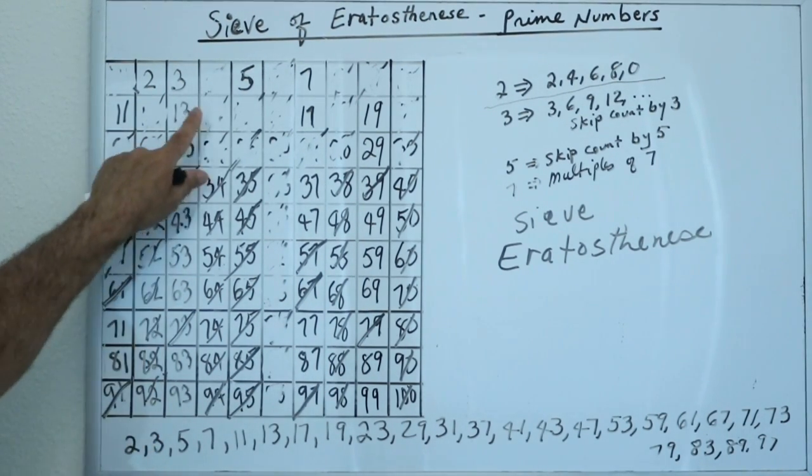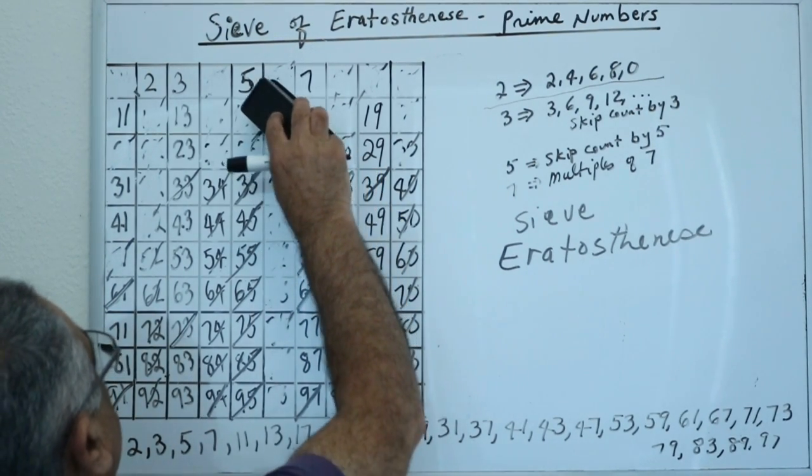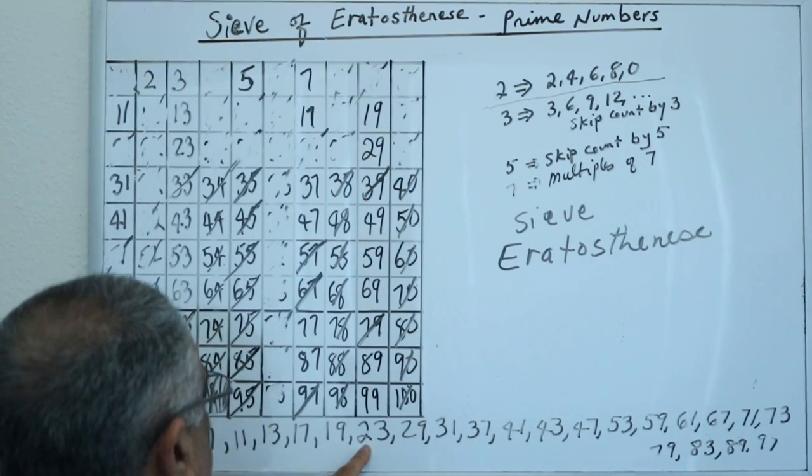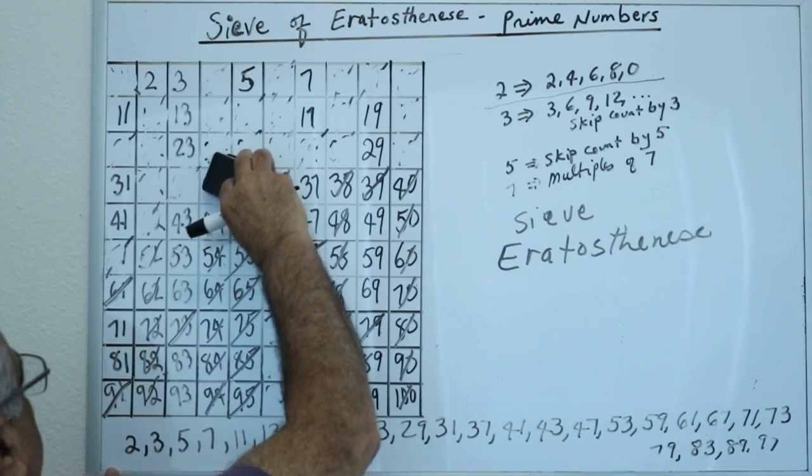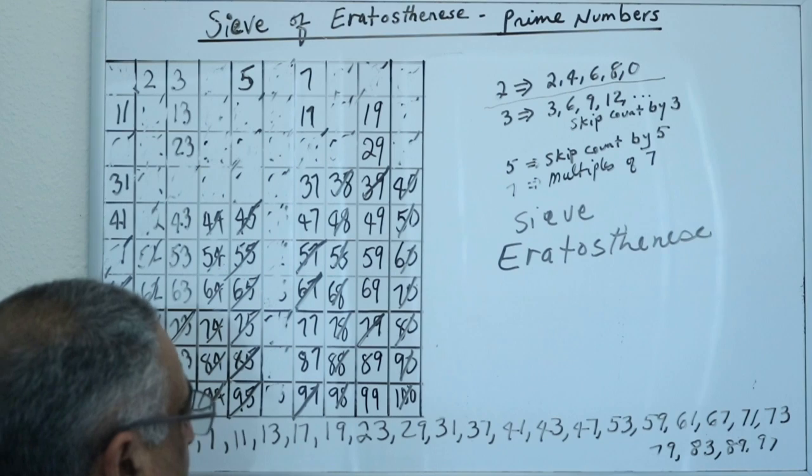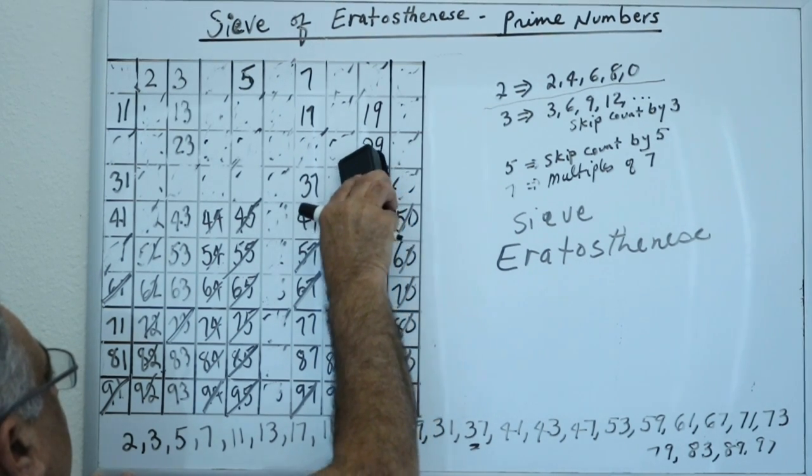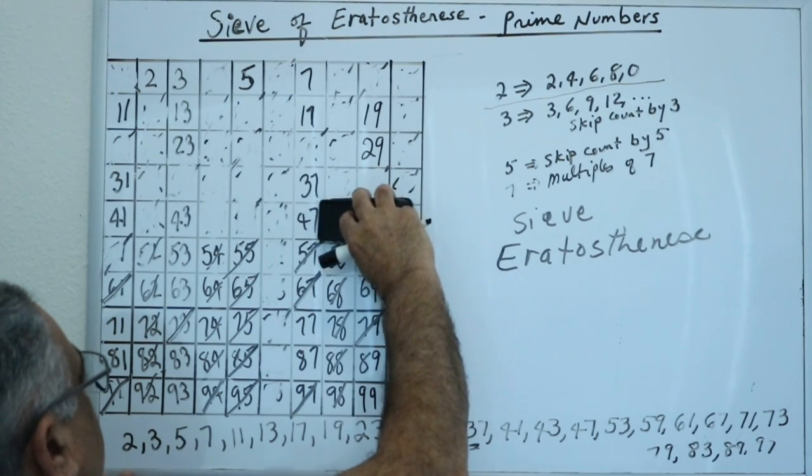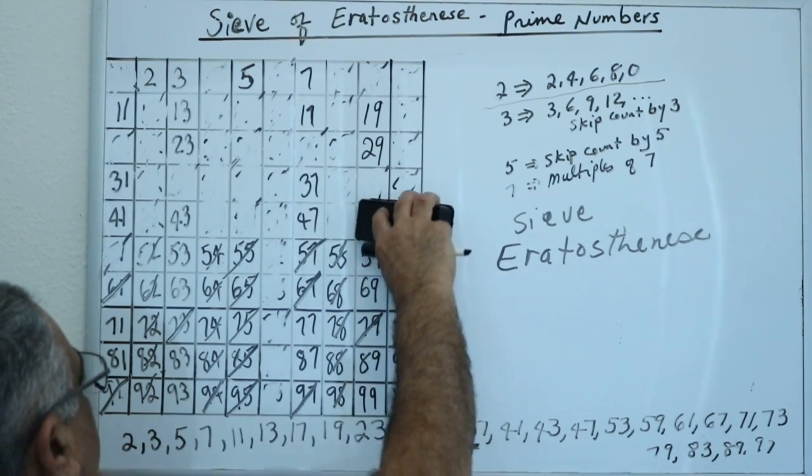So if you look back, 2, 3, 5, 7, 11, 13, 17, 19. Then you got 23, 29, 31, 37 is a prime number. 41 is a prime number. 43, 47. I eliminated 49, we got to cross it out. So this is my complete set of prime numbers.